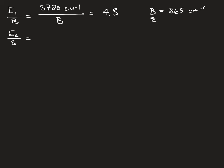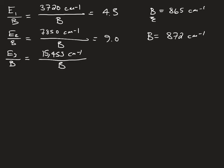So E2 over B, B equals 872 wave numbers. In this case, B equals 863 wave numbers. For an average value of B equal to 867 wave numbers.